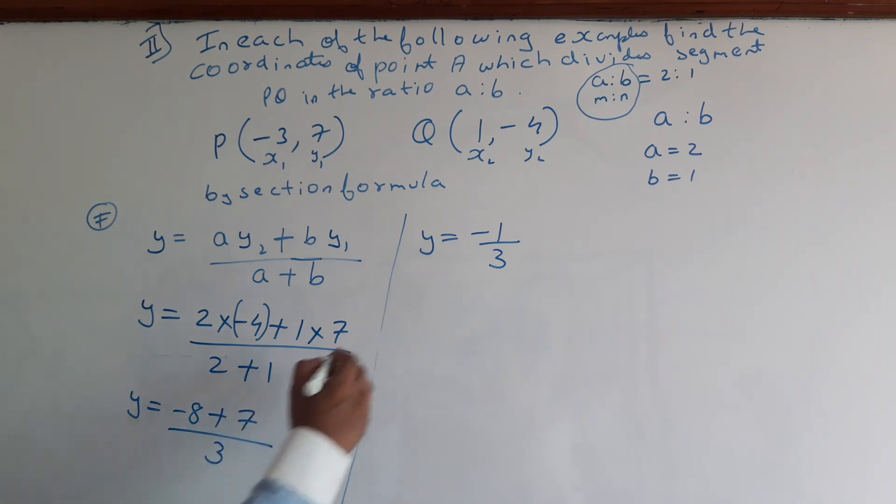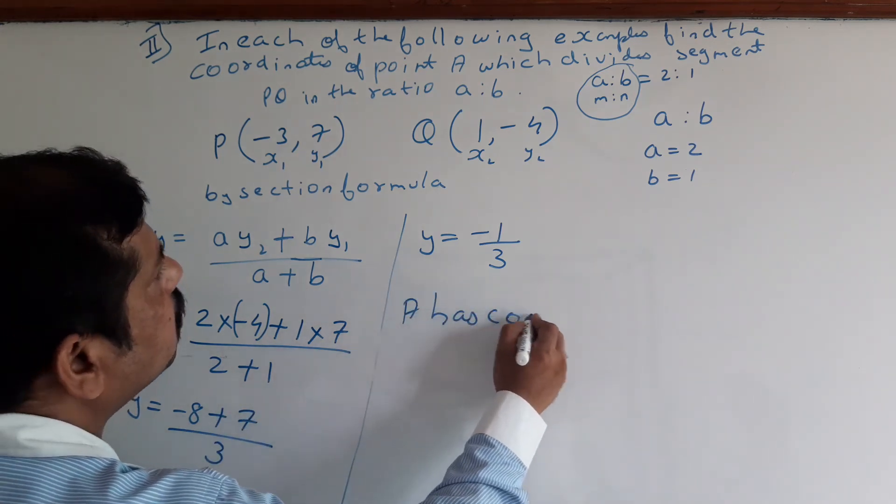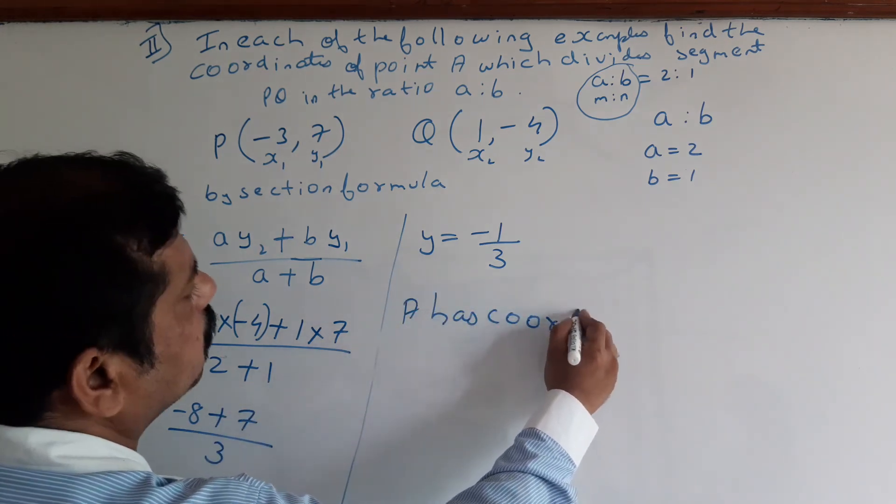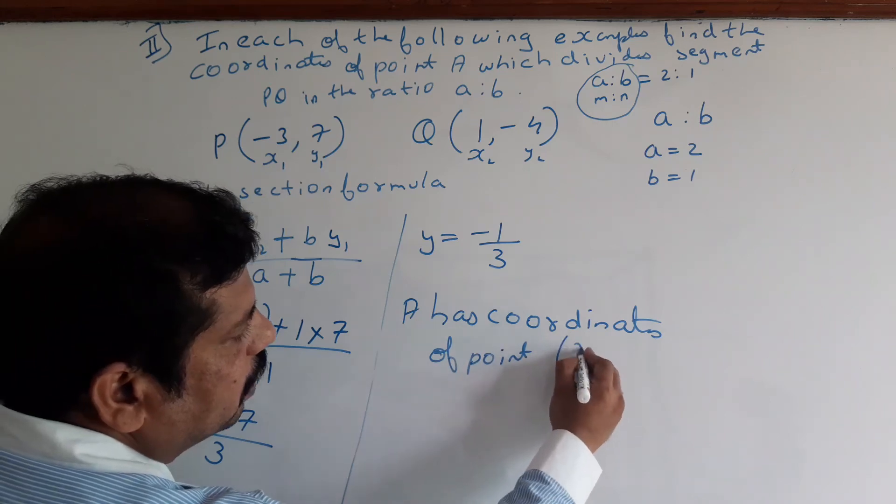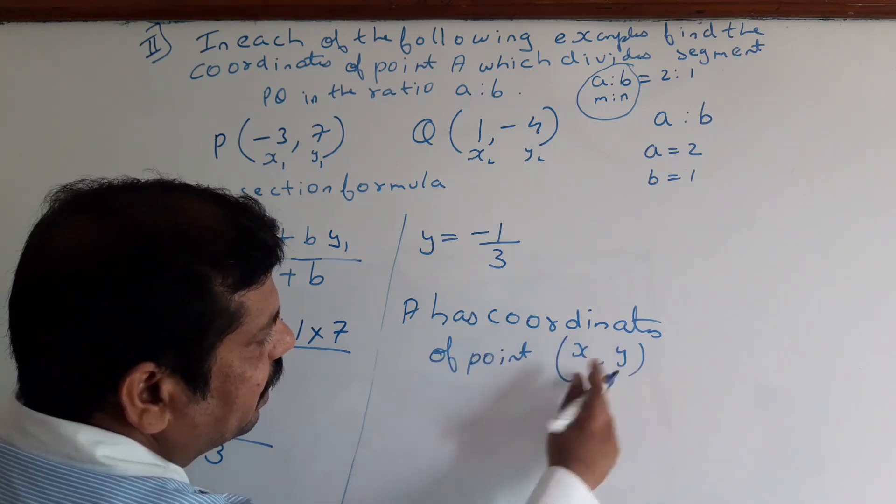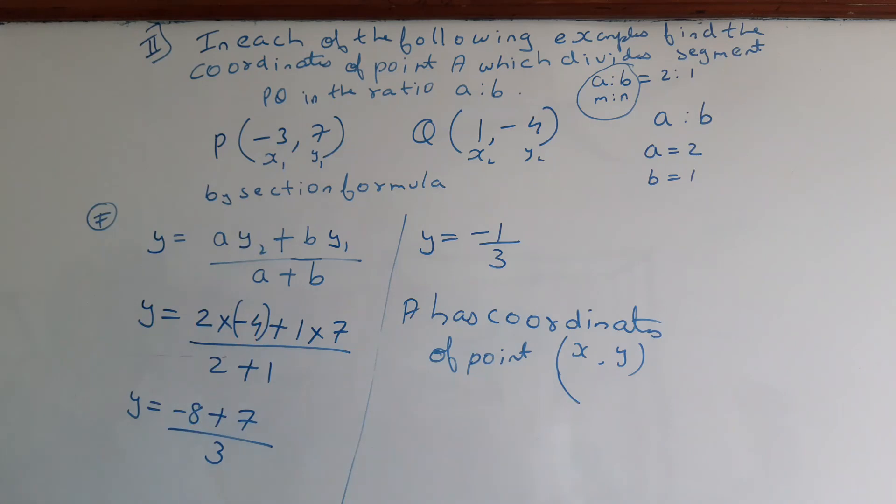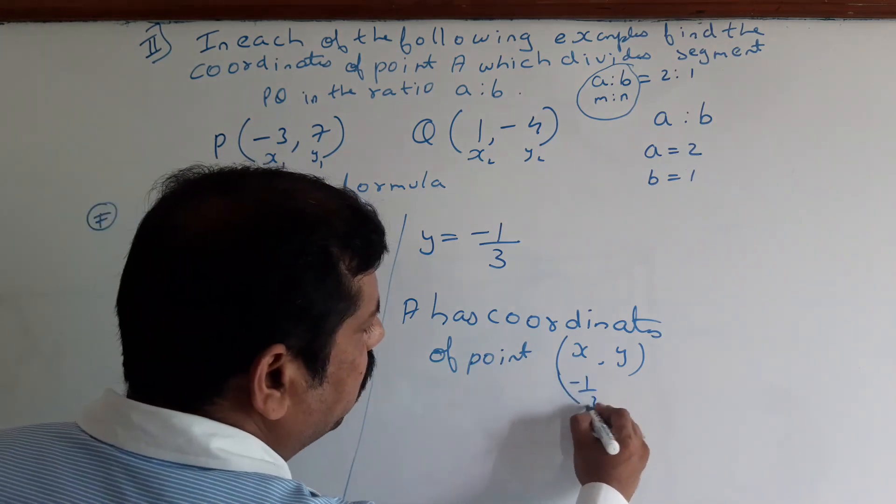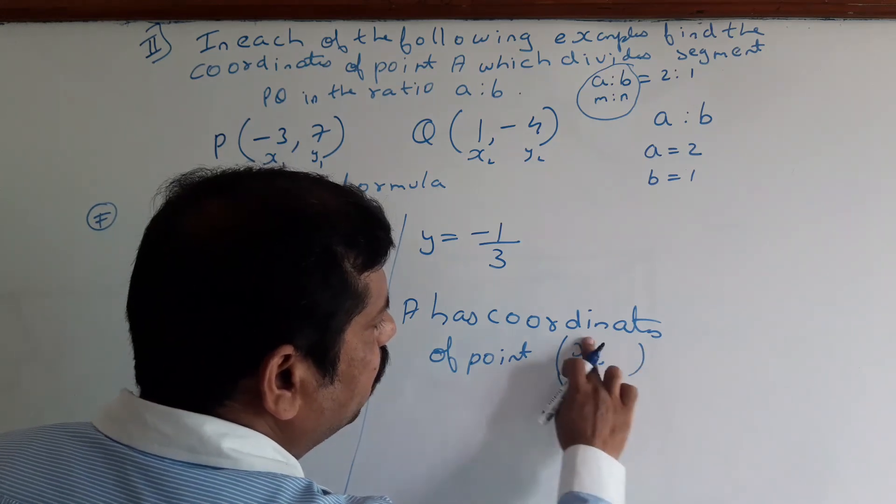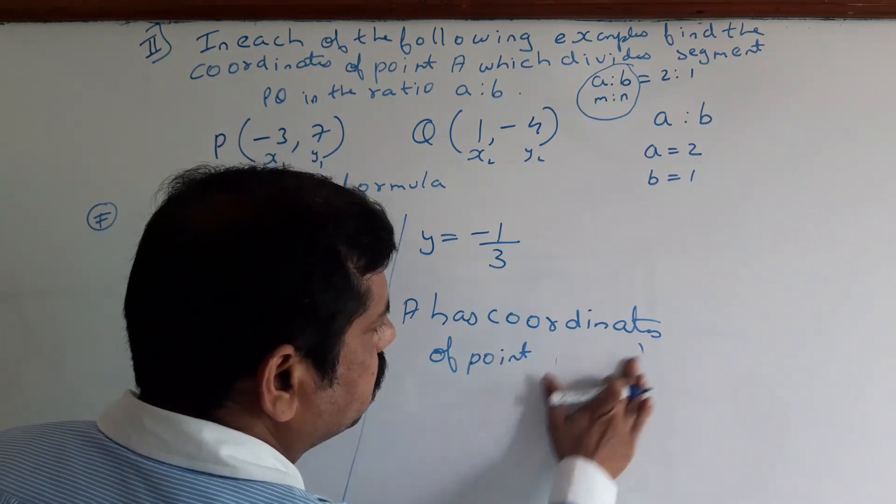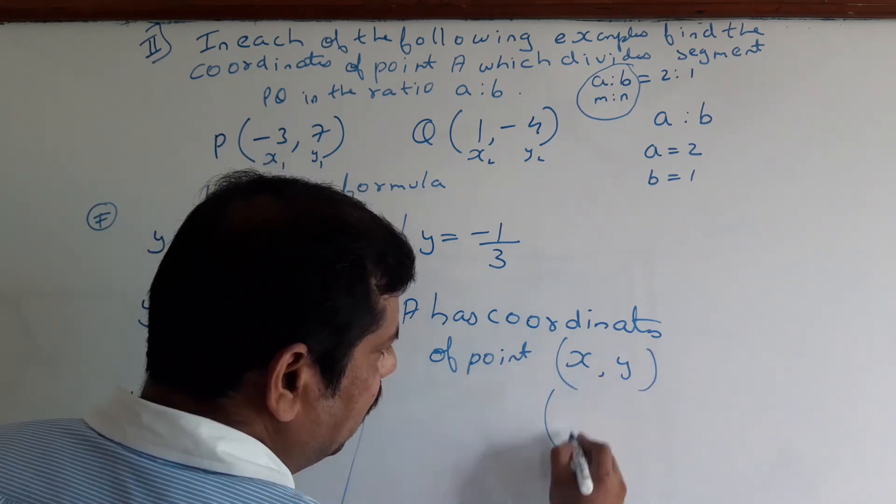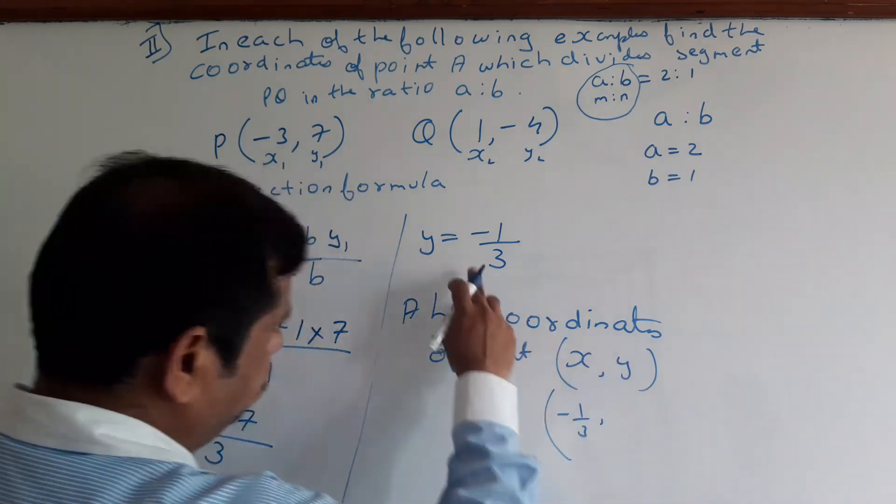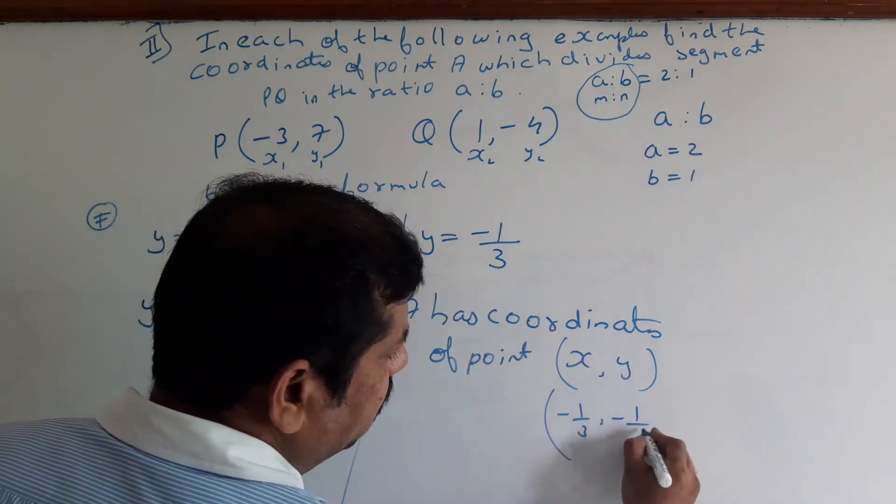The coordinates of point A are X equals -1/3 and Y equals -1/3. So the point is (-1/3, -1/3).